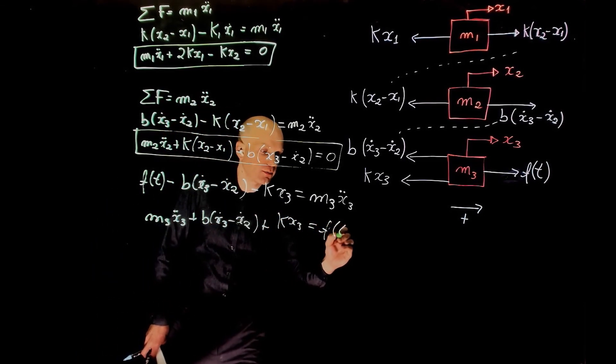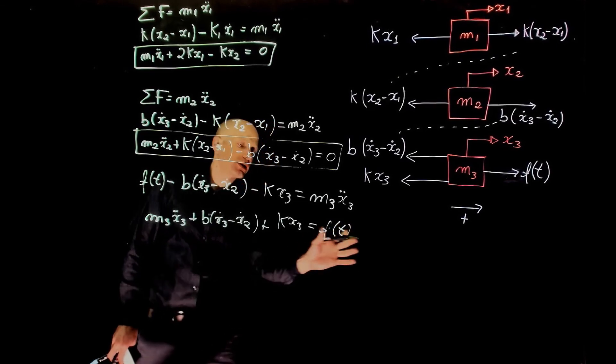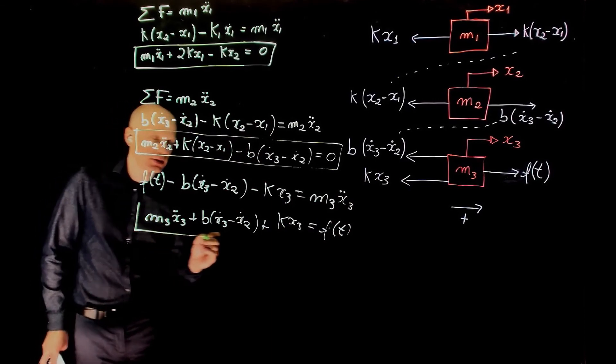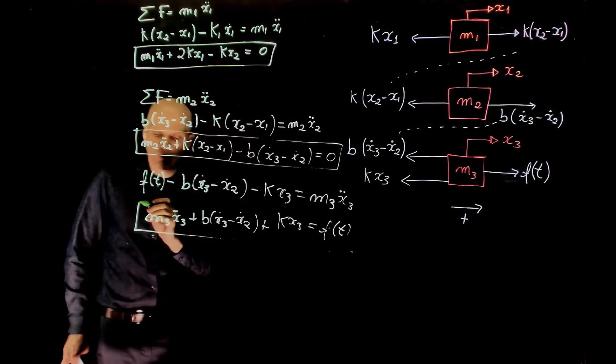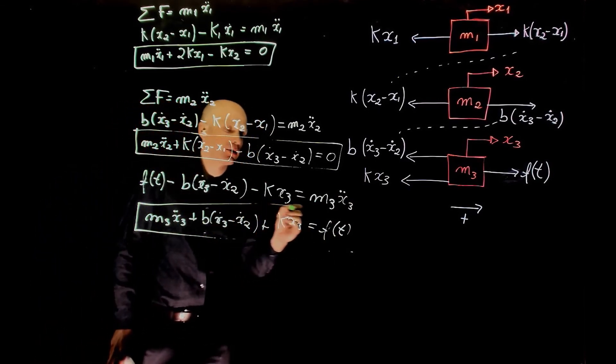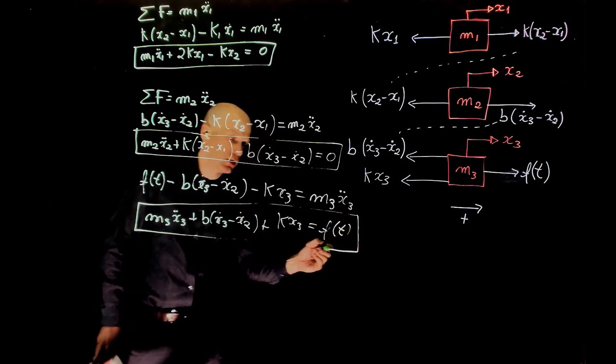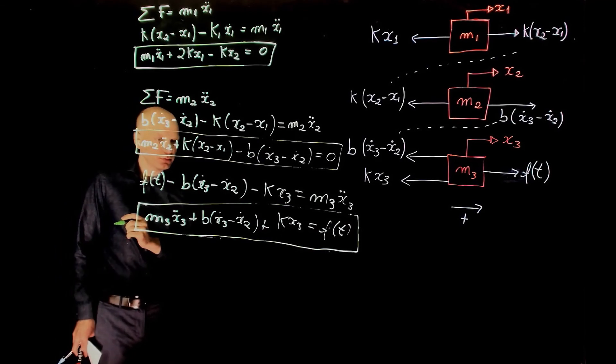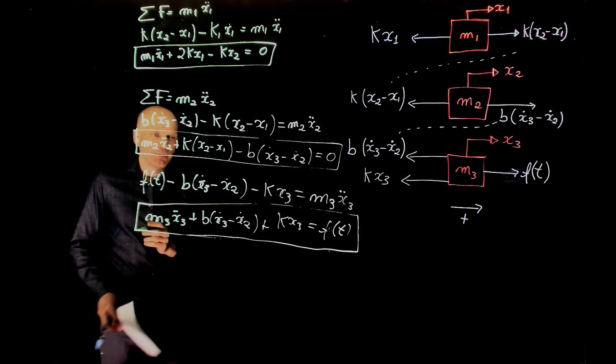So again, we keep f(t) separate, because this is an external input to the system. This is the main source of force applied externally to the system. And here is now the equation for m3.